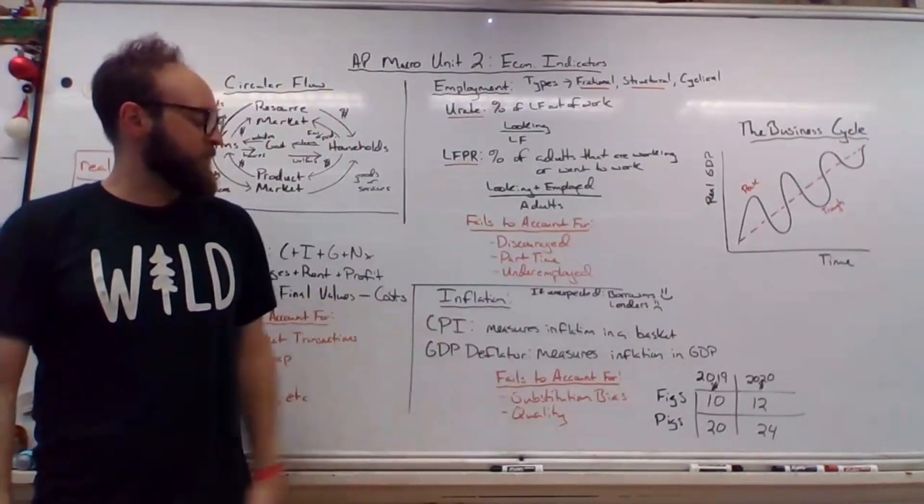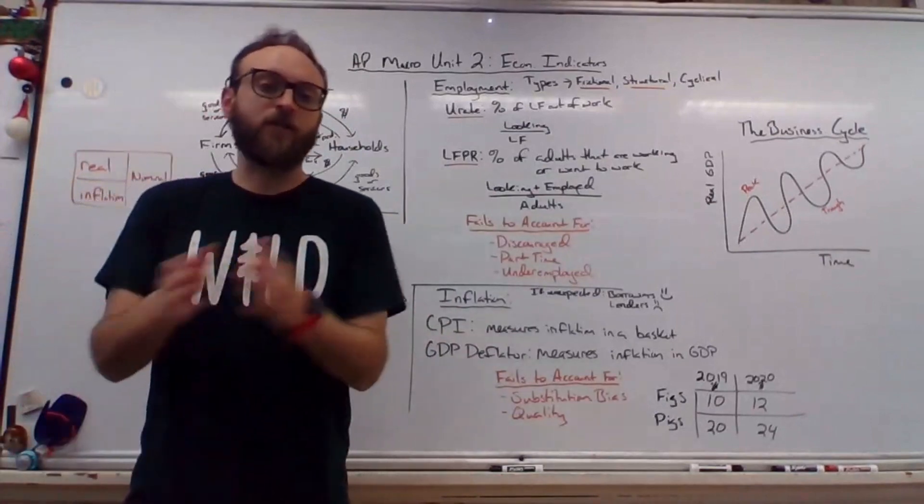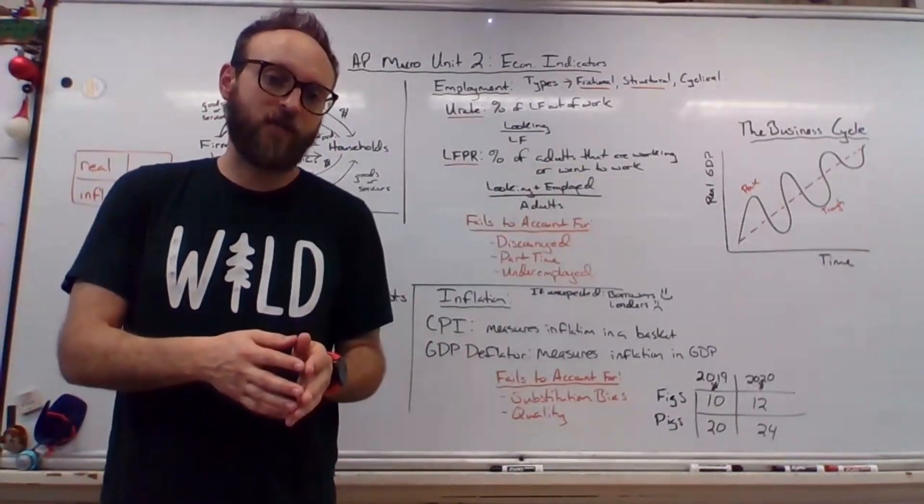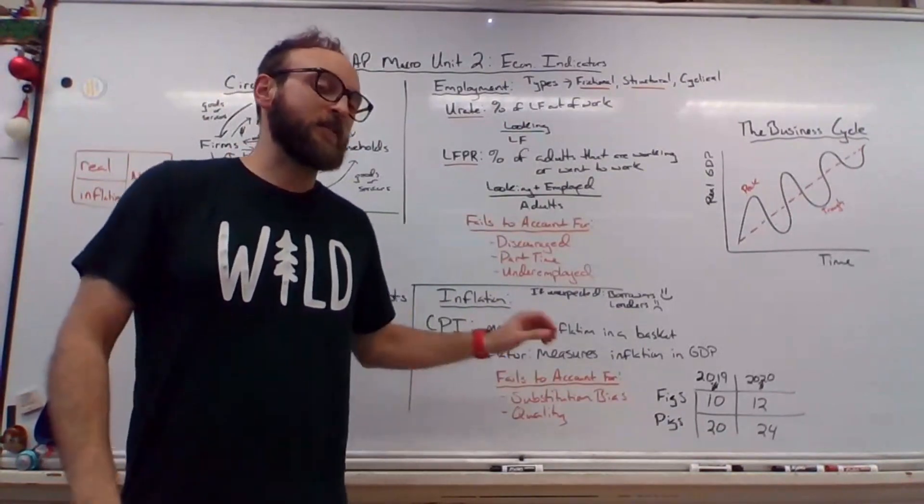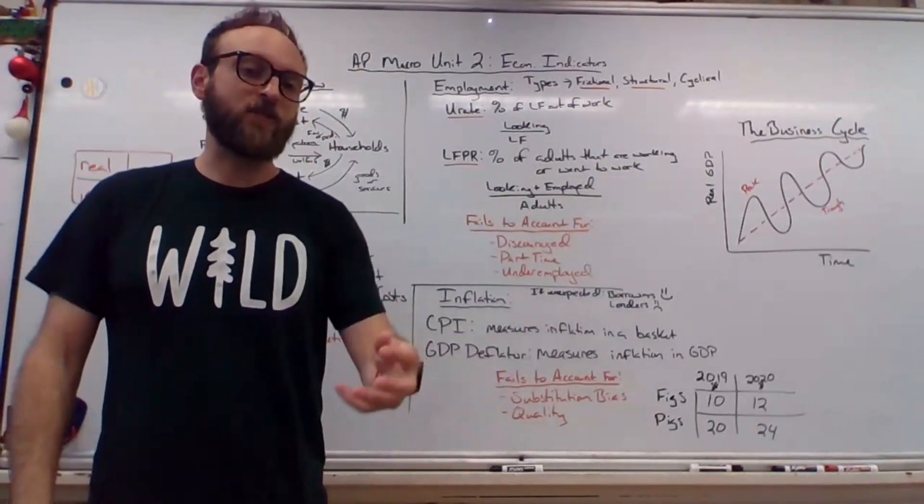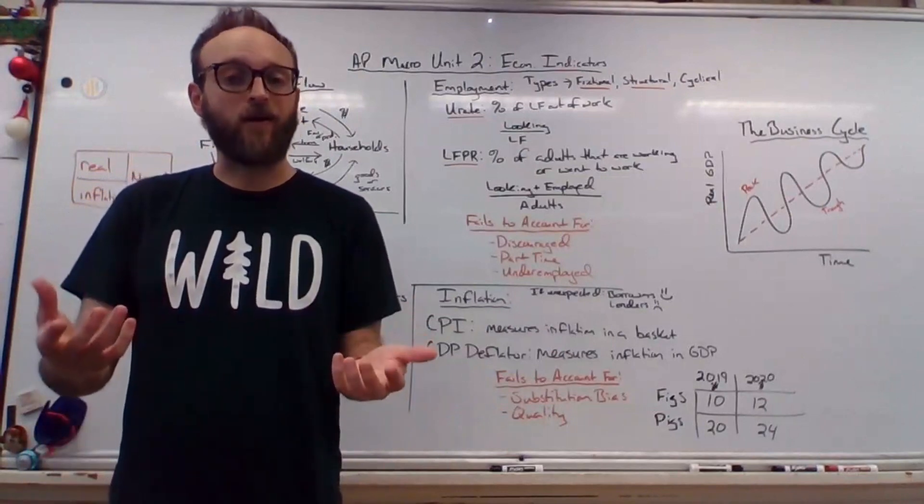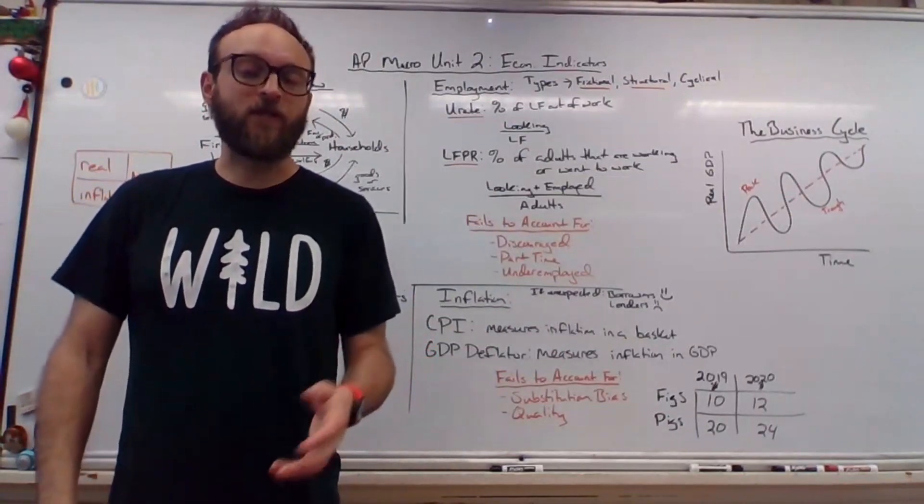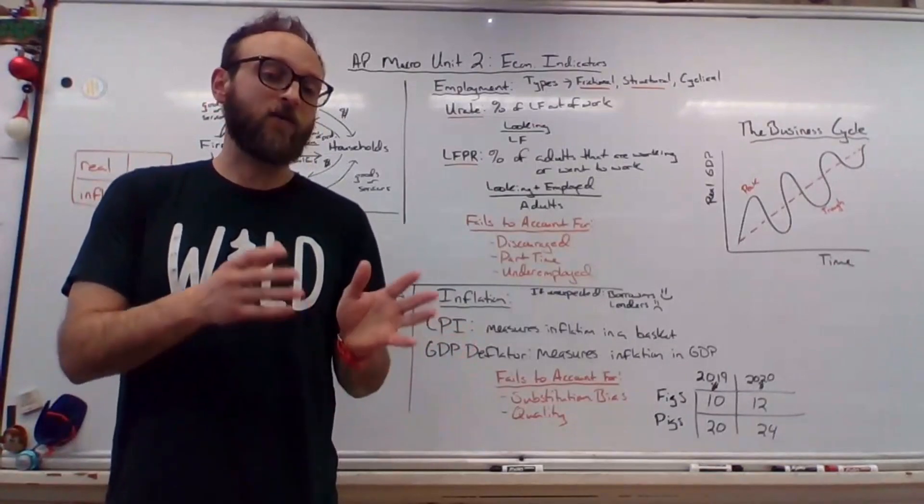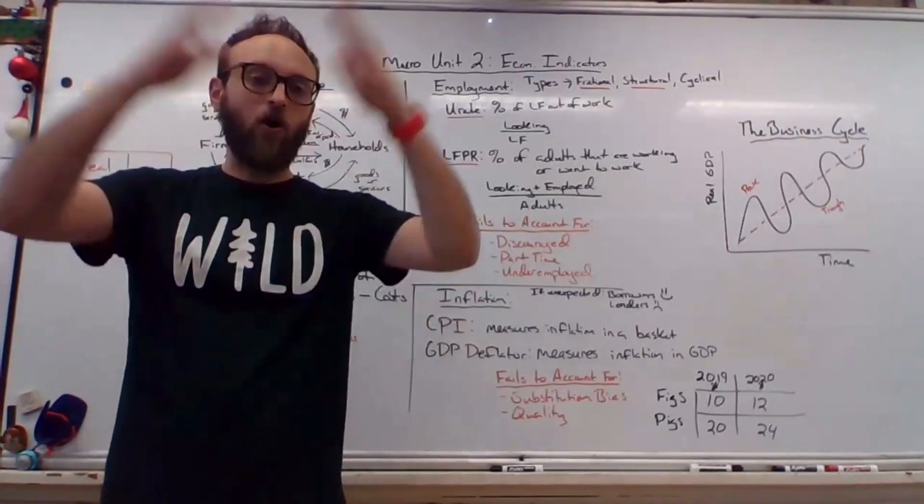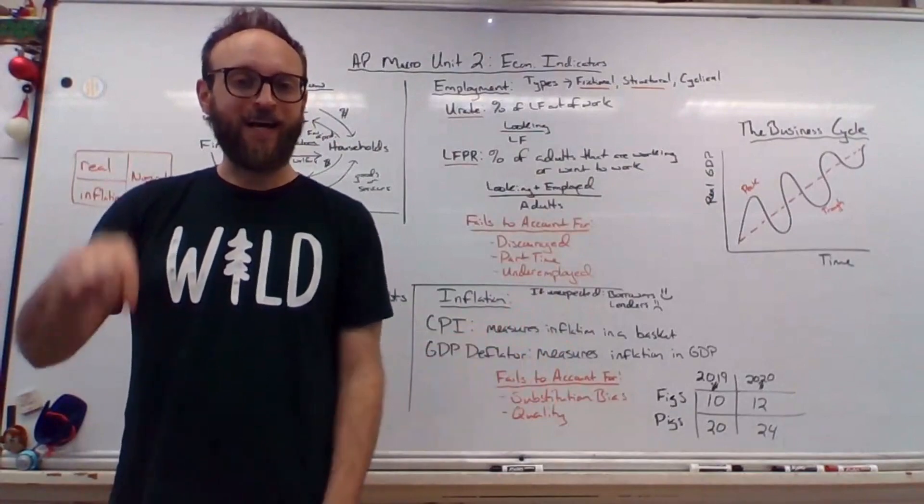This is usually given to us as a number between 100 to 200. So if it's 110, for example, that would be 10% inflation on this basket of goods. The GDP deflator is the exact same concept, but it's inflation in GDP throughout the entire economy. So they both measure inflation, typically units of 100 to 200 to make math easier. However, the GDP deflator is for all GDP and CPI is for a little basket of goods.